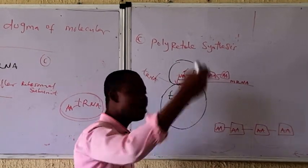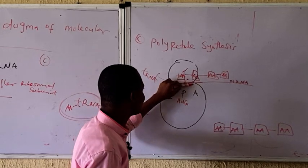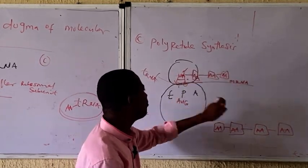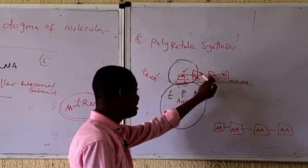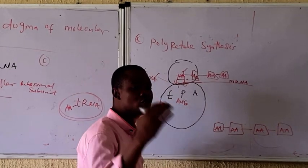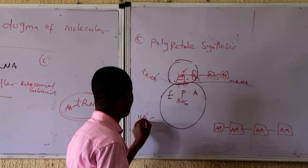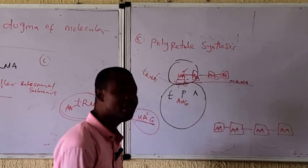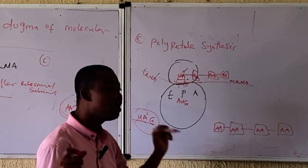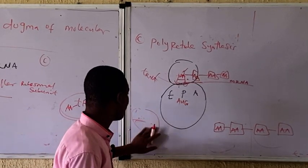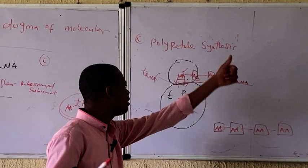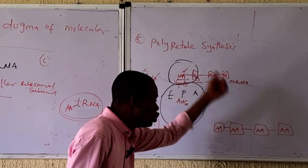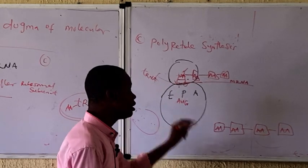Then another tRNA will bring another amino acid to the A region. Once it drops the amino acid, it will be released through the exit site. tRNA keeps bringing amino acids to the ribosome until it reaches the stop codon, which is UAG. This process of tRNA bringing amino acids to the mRNA will continue until there is a stop codon.